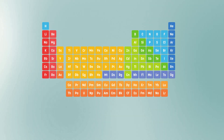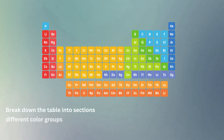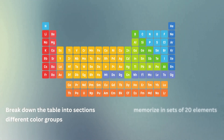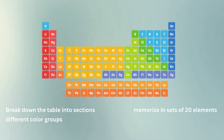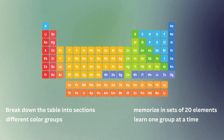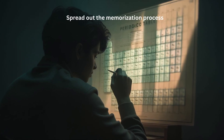How you memorize the periodic table depends on what works best for you and your learning style, but here are some recommendations. Break down the table into sections — you could memorize element groups like different color groups, go one row at a time, or memorize in sets of 20 elements. Learn one group at a time, master that group, and then learn the next group until you know the whole table.